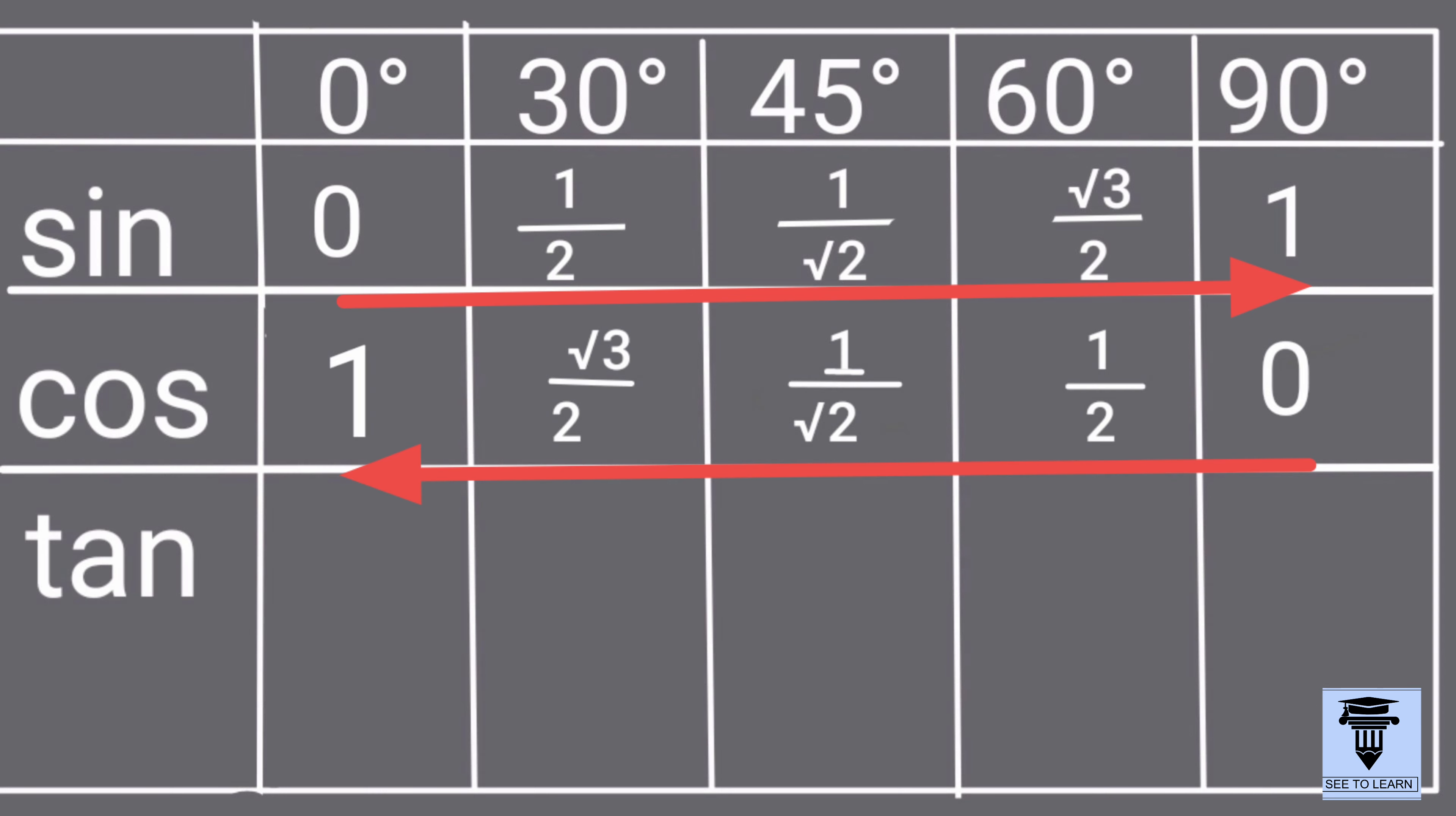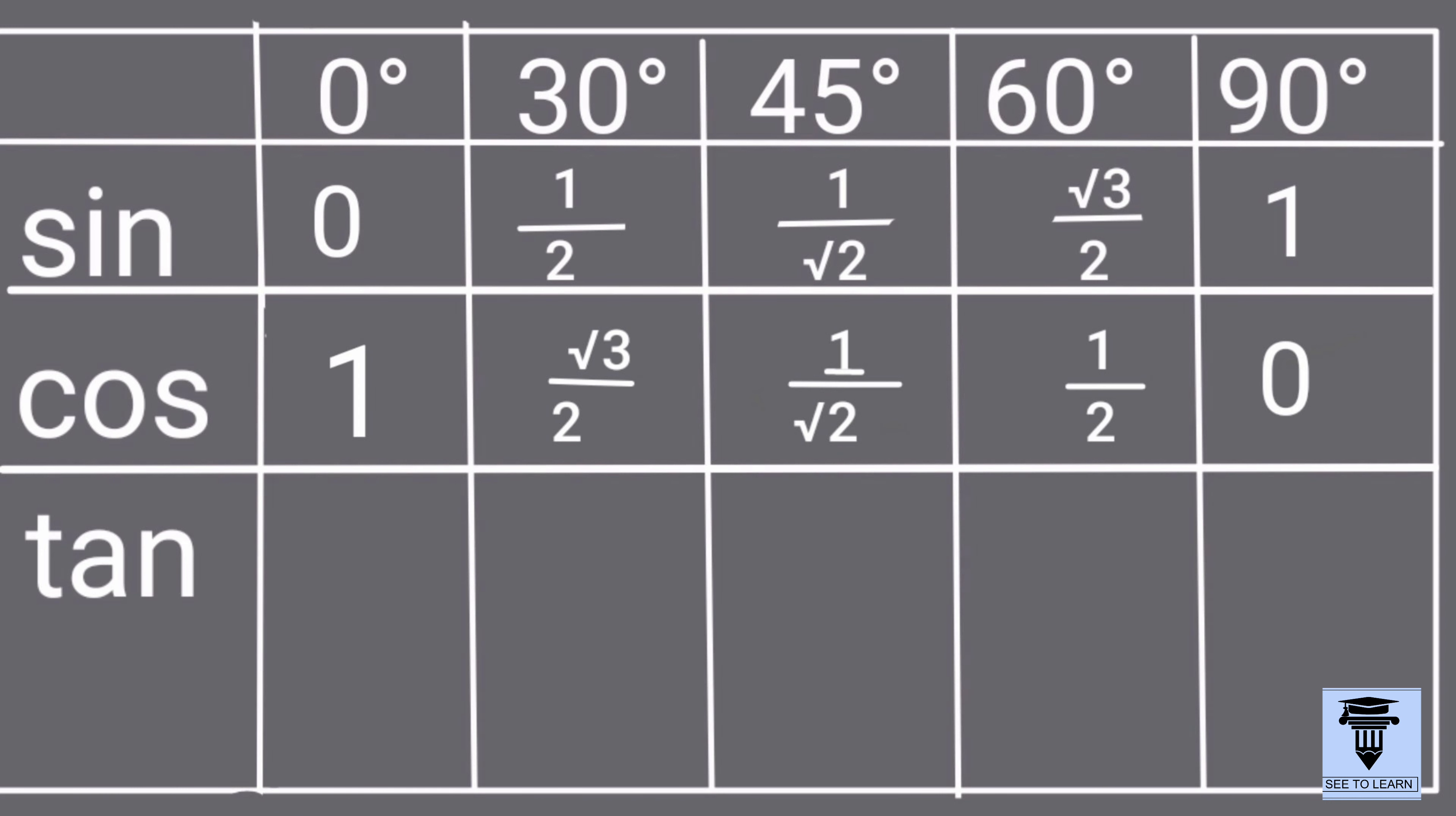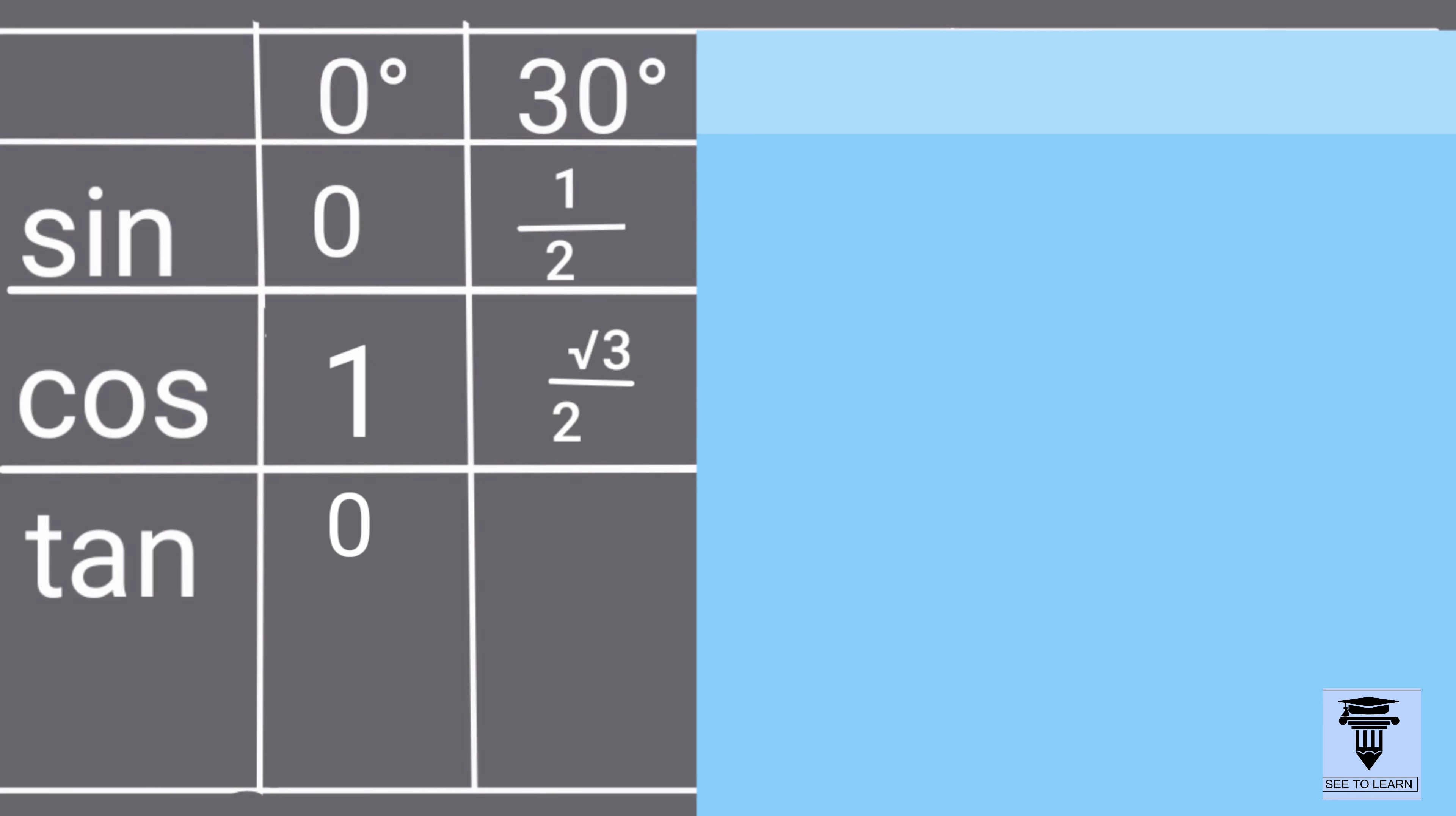Now, the tan ratios. Tan theta is equal to sin theta upon cos theta. So, we have to divide the sin ratios by cos ratios. Tan 0 is equal to 0 over 1, that is 0. Tan 30 is equal to 1 half divided by root 3 upon 2, which is equal to 1 by root 3.